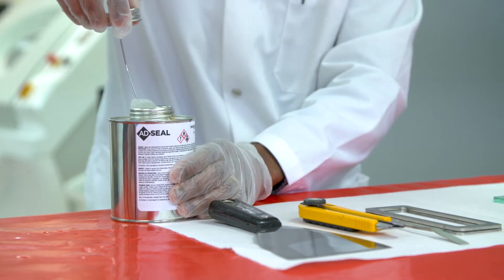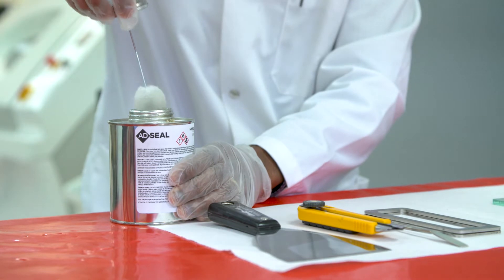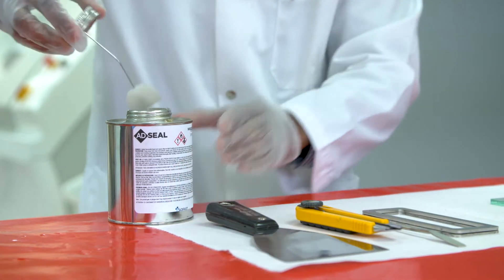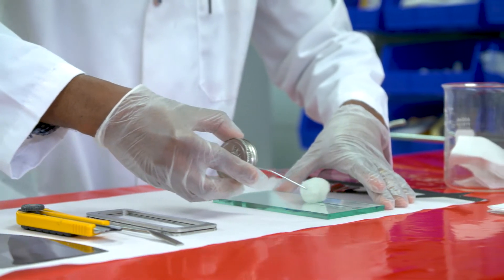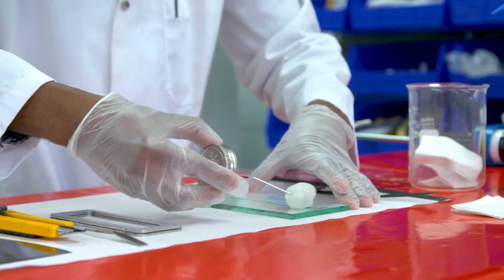If necessary, apply Adseal Primer MK60095 an hour before sealant application to prevent further contamination. Then allow primer to dry for approximately 20 minutes.